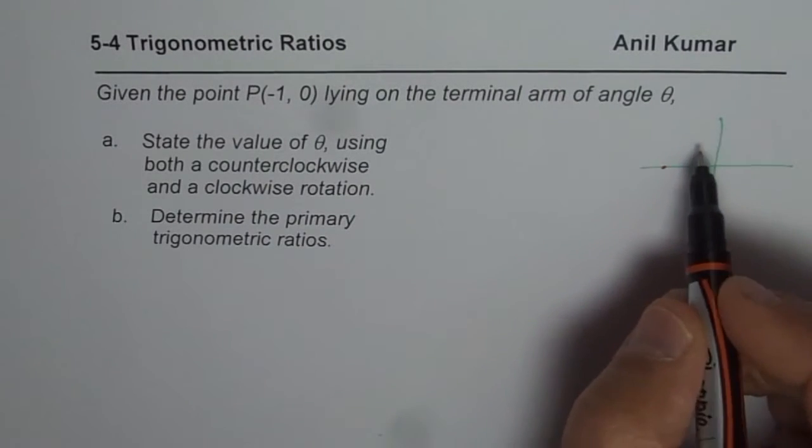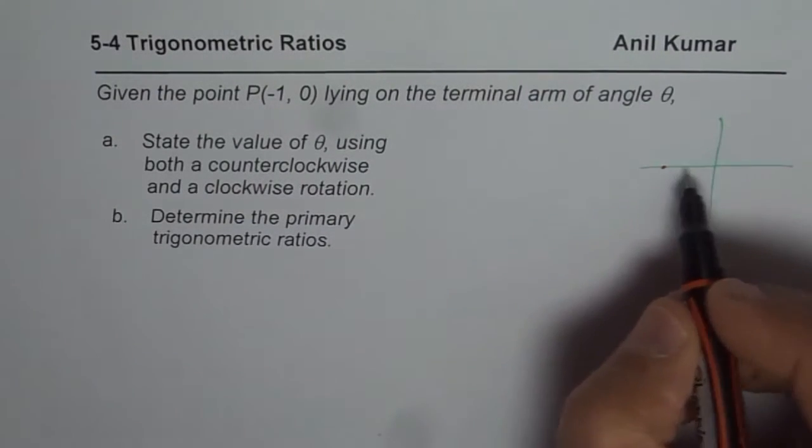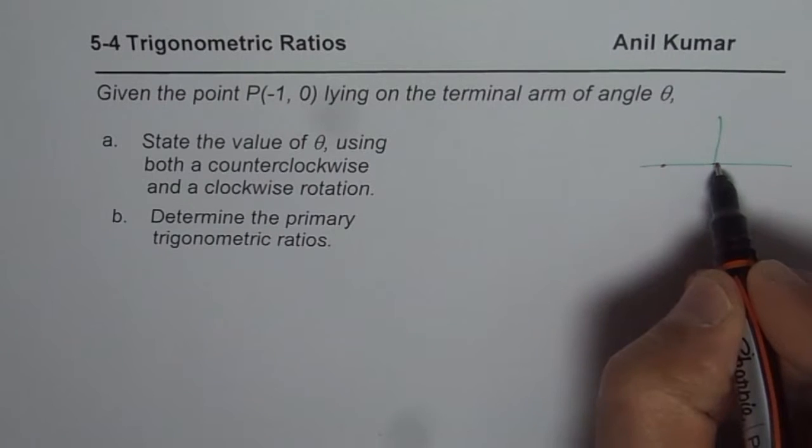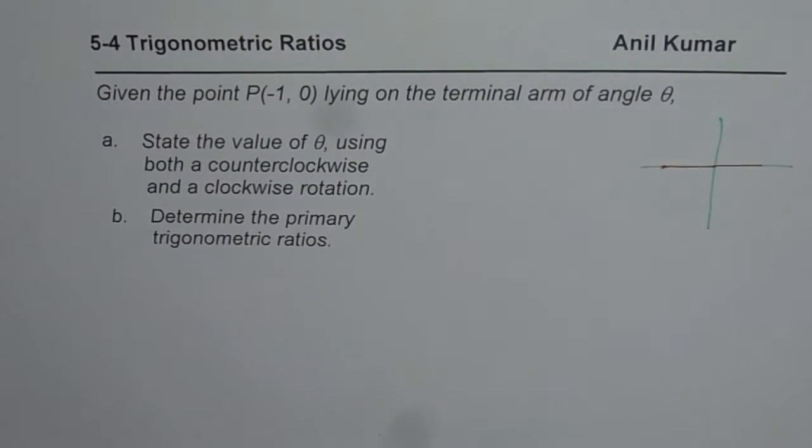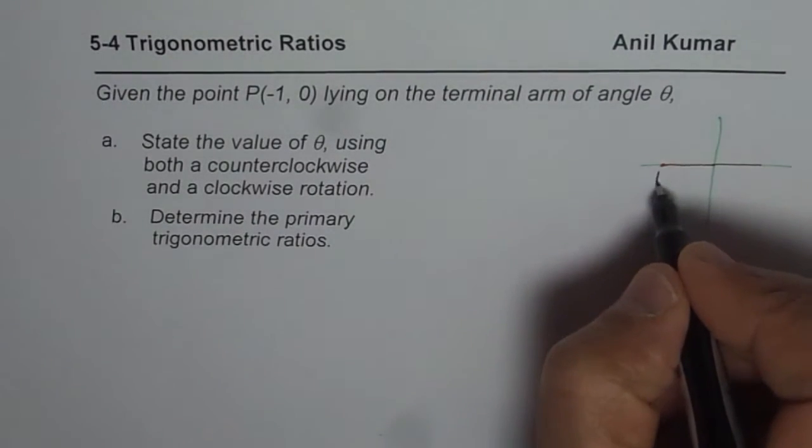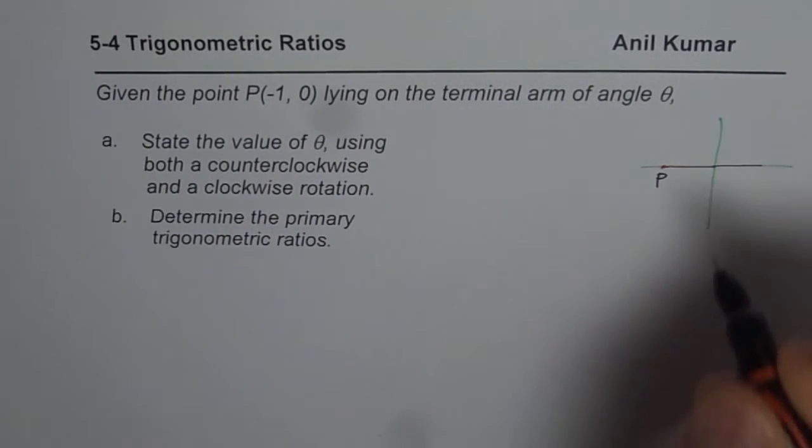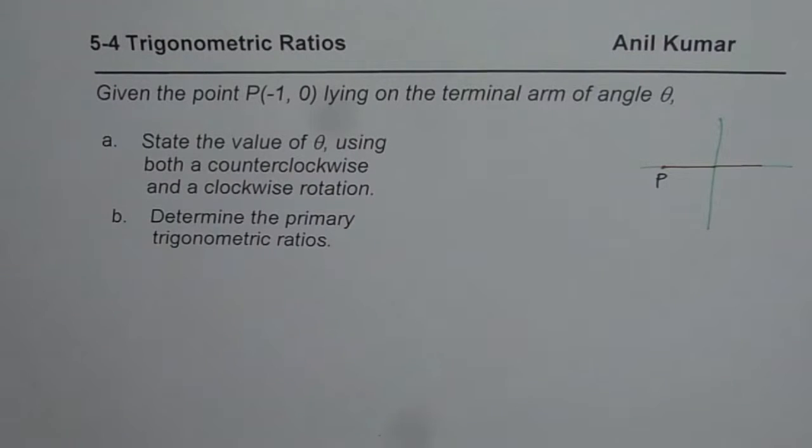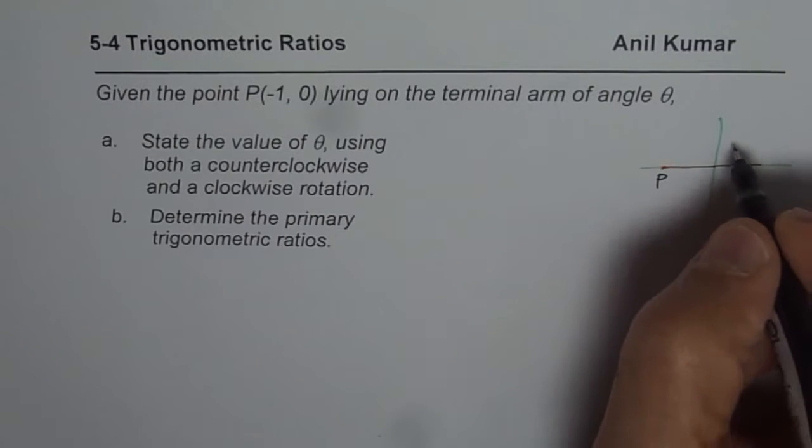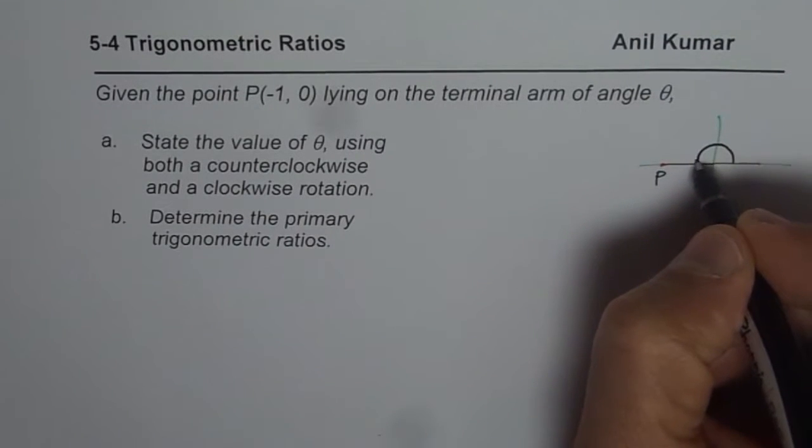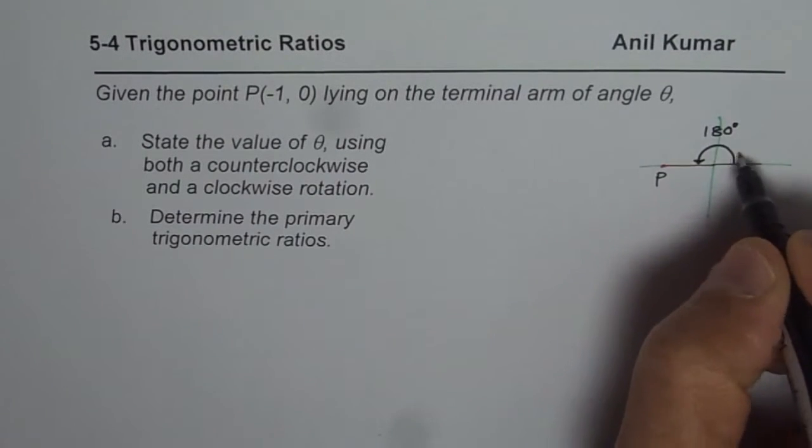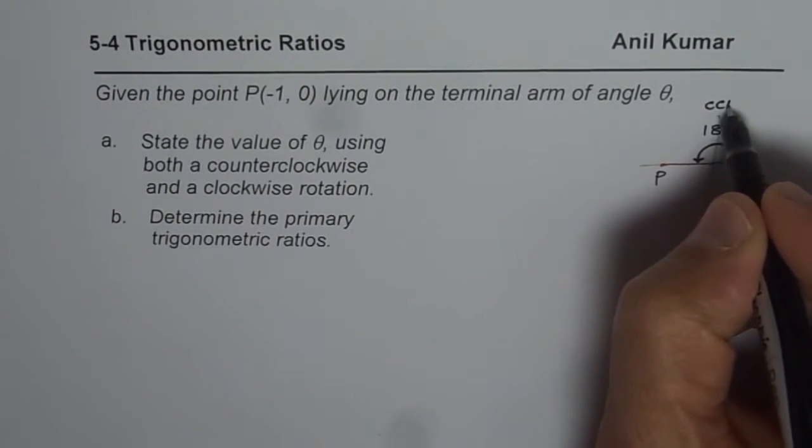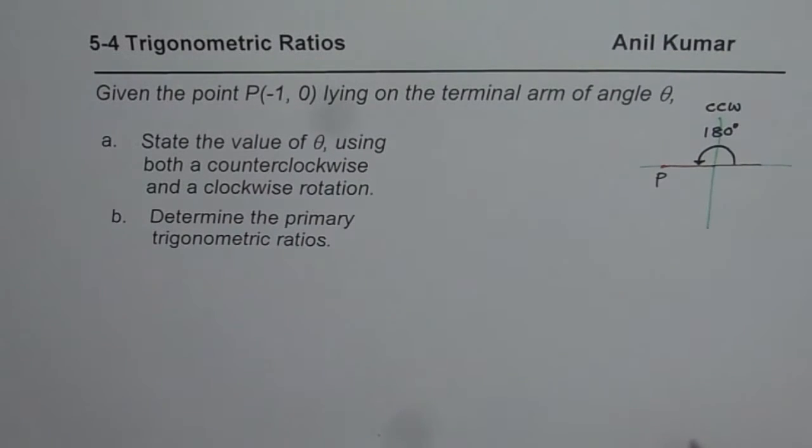Now since it is in standard position, it makes an angle of theta. So what is the angle theta? Let us say this is the point P for us. The angle theta for us will be, if you go counterclockwise, 180 degrees.